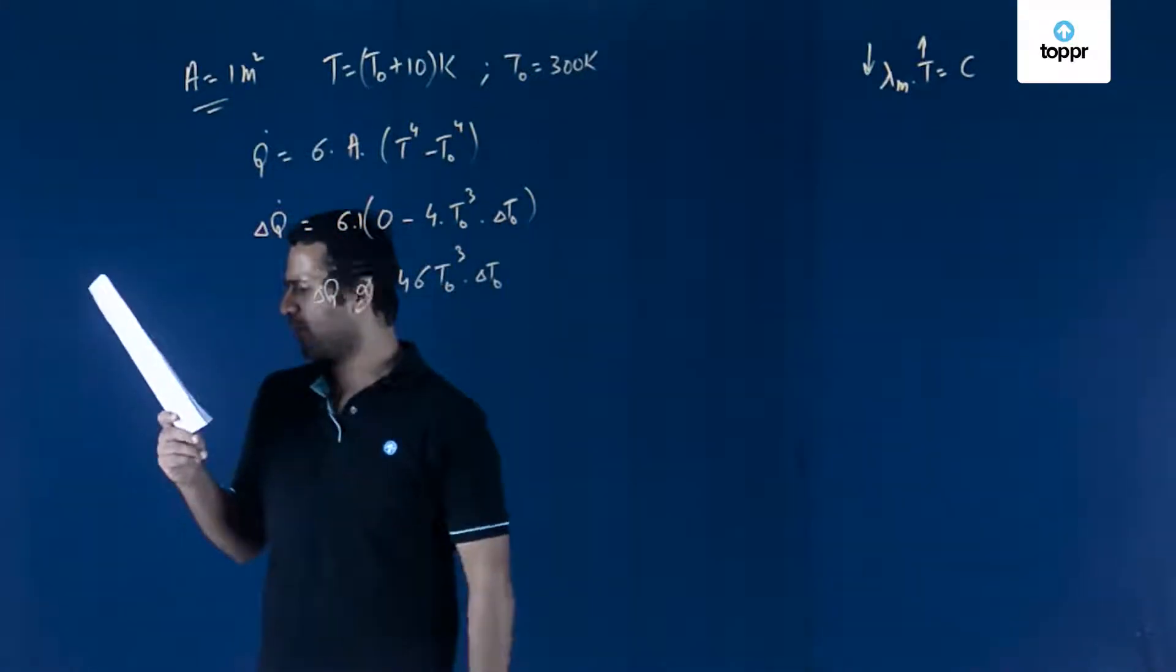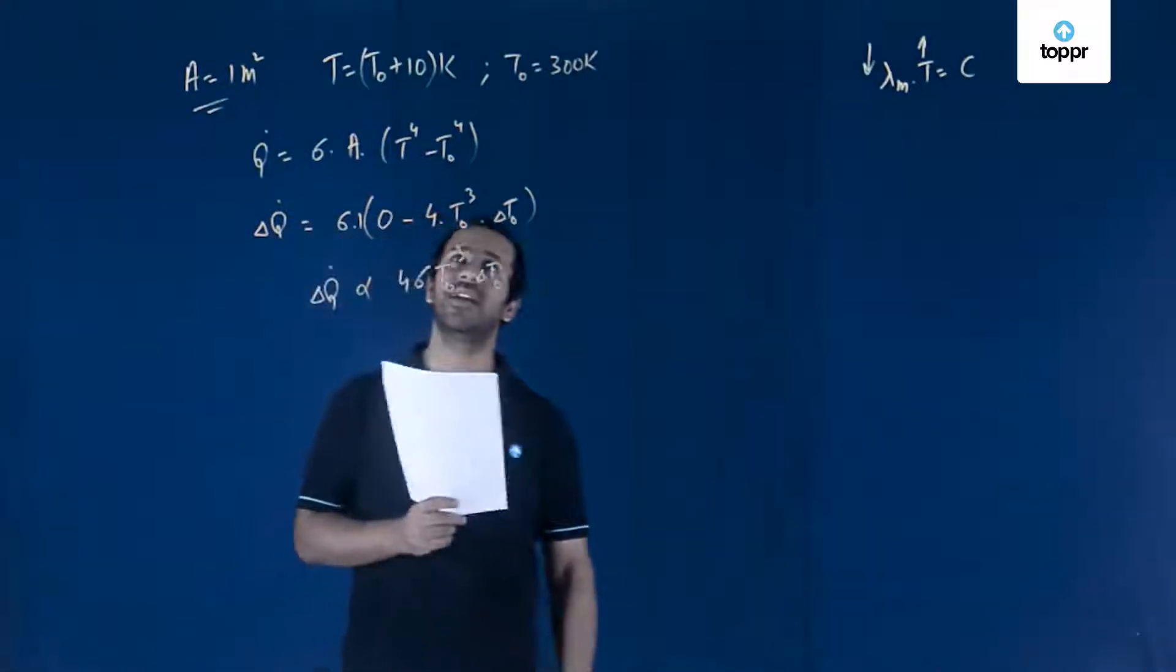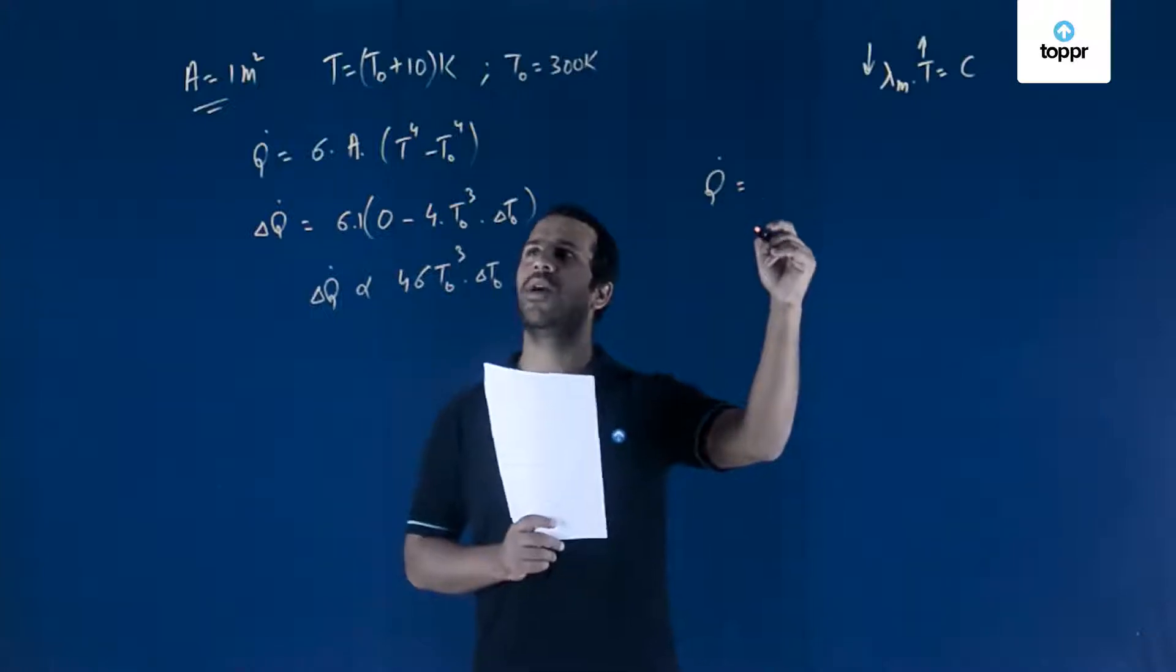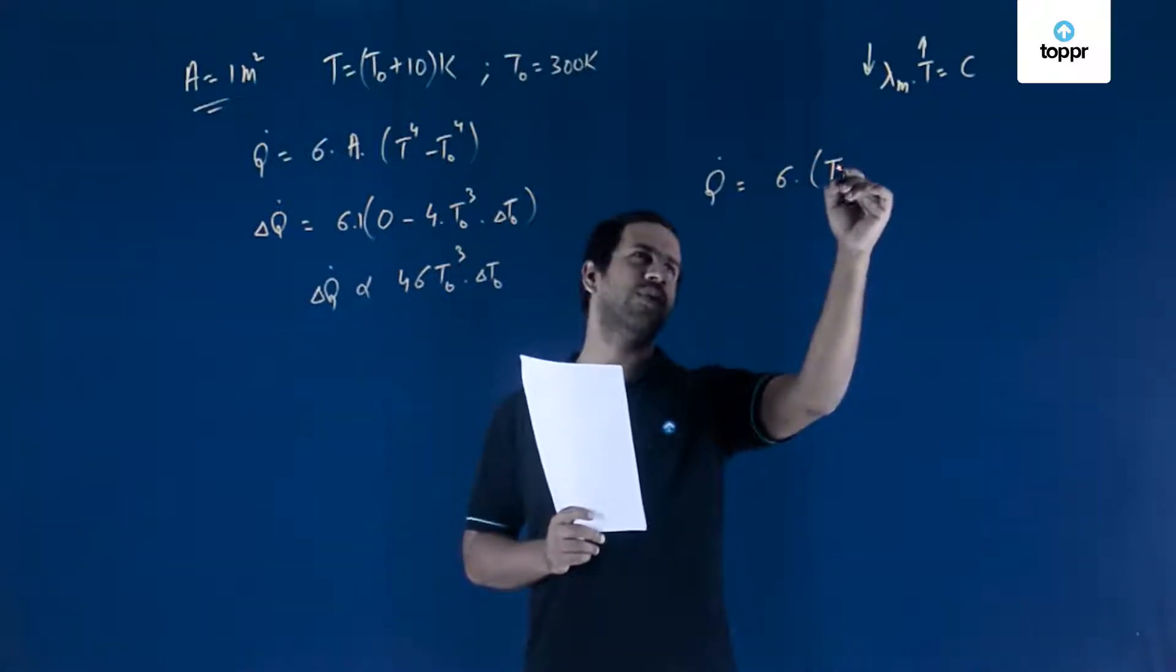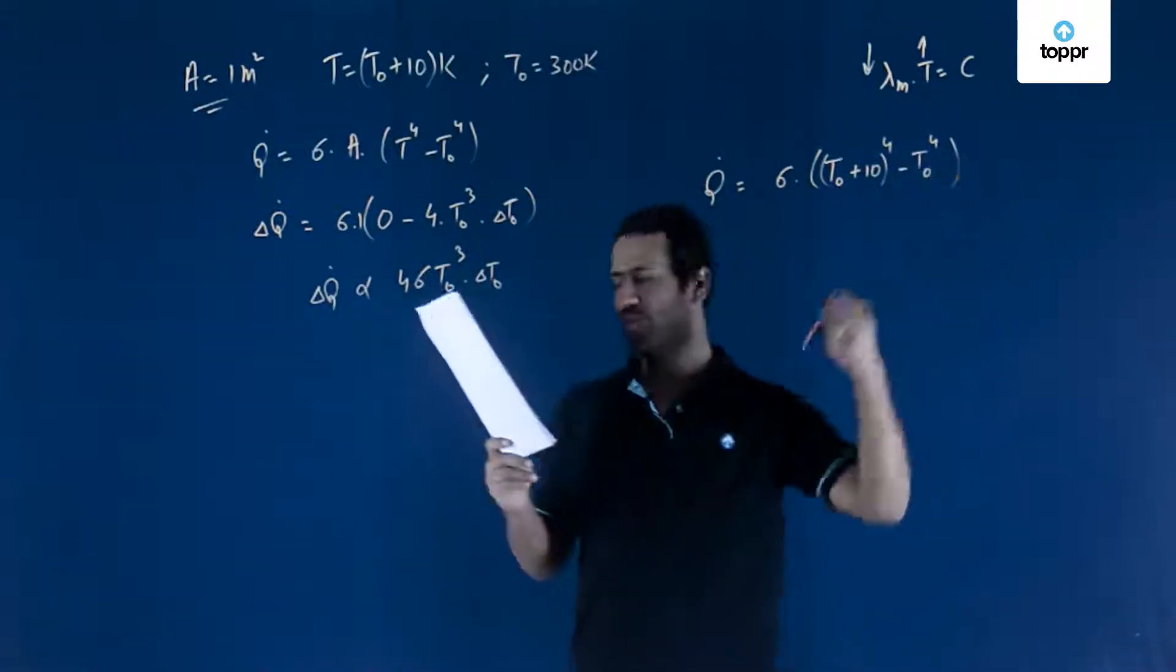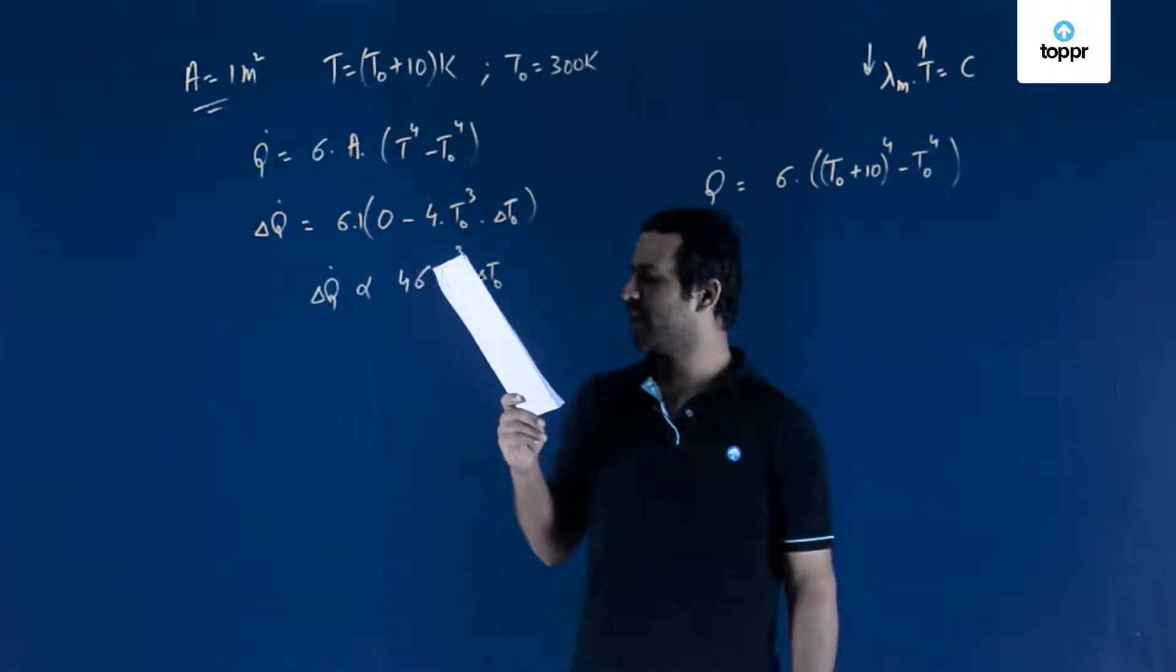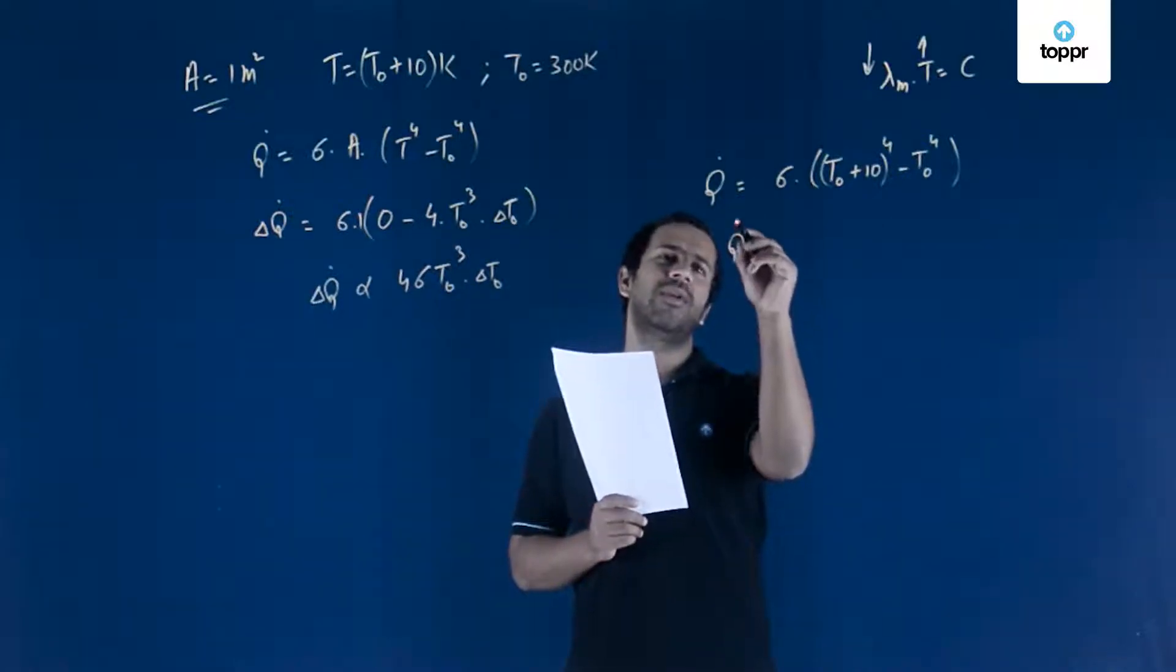And the last one is the amount of energy radiated by the body in one second is close to 60 Joules. To find this, you have the expression Q dot equals sigma into T raised to 4. You can write it as (T0 plus 10) raised to 4 minus T0 raised to 4. The value you are given is sigma into T0 raised to 4. You can take T0 raised to 4 common from here.